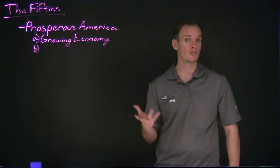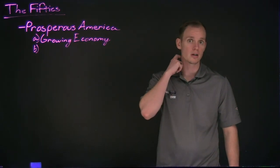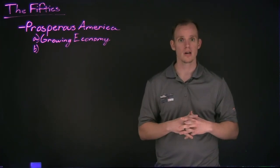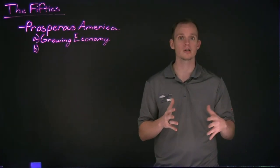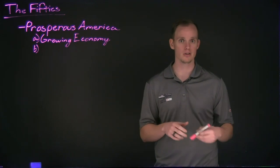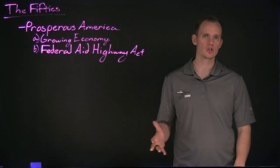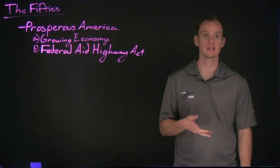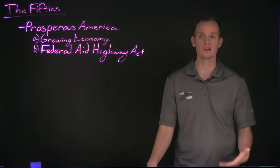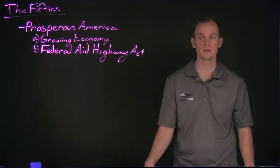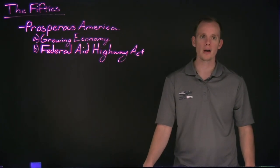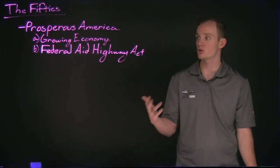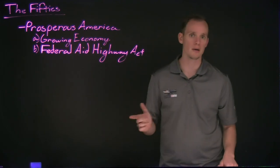As we see this economic growth for the American industrial sector, we'll also see that the American economy is going to grow in other fashions, mainly with the construction of the interstate system during this period. During the 1950s, the main administration in office would be that of Dwight Eisenhower. He had been elected in 1952, and many of the policies he's going to establish will help contribute to that growing American economy. Perhaps one of the most significant acts he's going to pass that will contribute to economic growth would be the Federal Aid Highway Act.